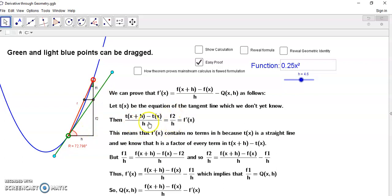This means that f prime of x contains no terms in h because tx is a straight line and we know that h is a factor of every term in this numerator. h is a factor of tx plus h minus tx. In fact it doesn't matter what function you put here, h will always be a factor of this difference.